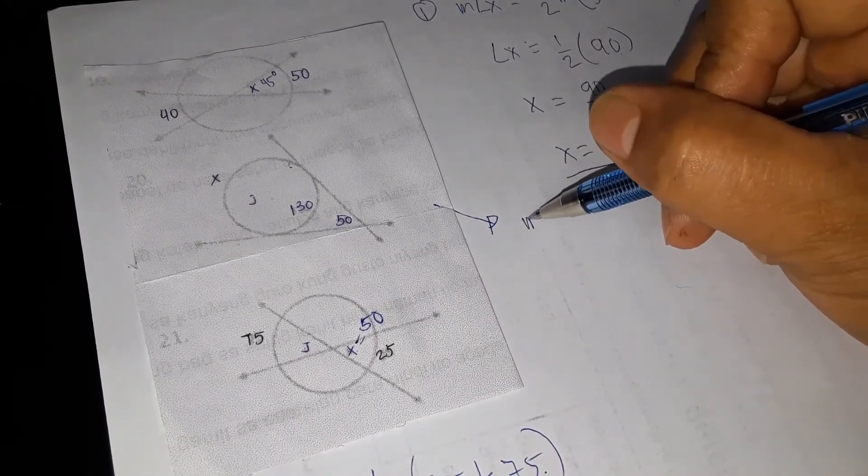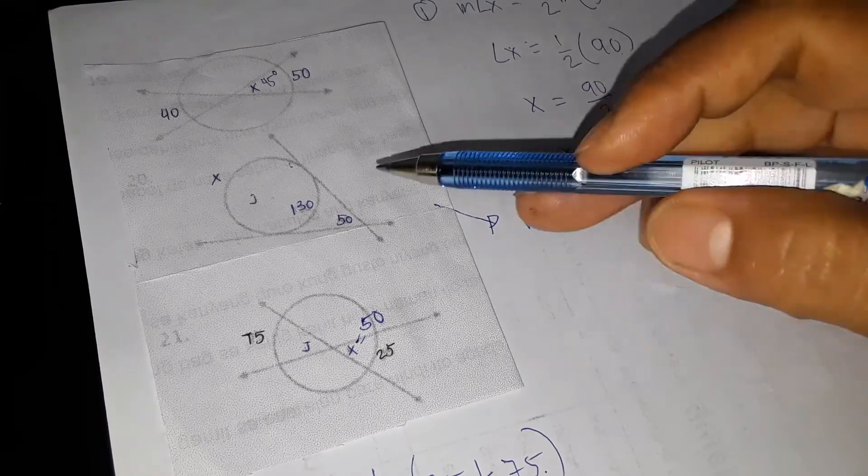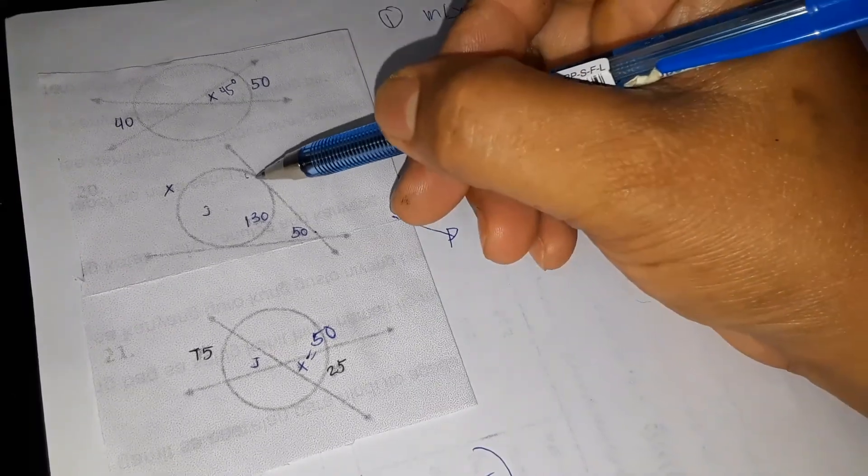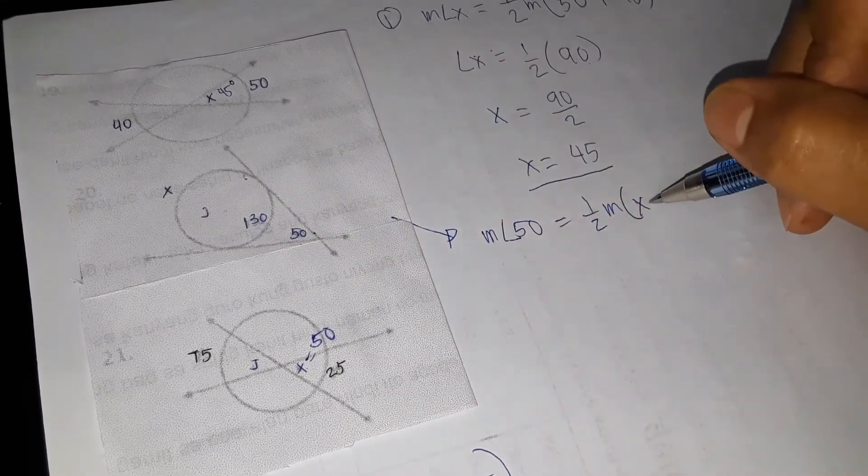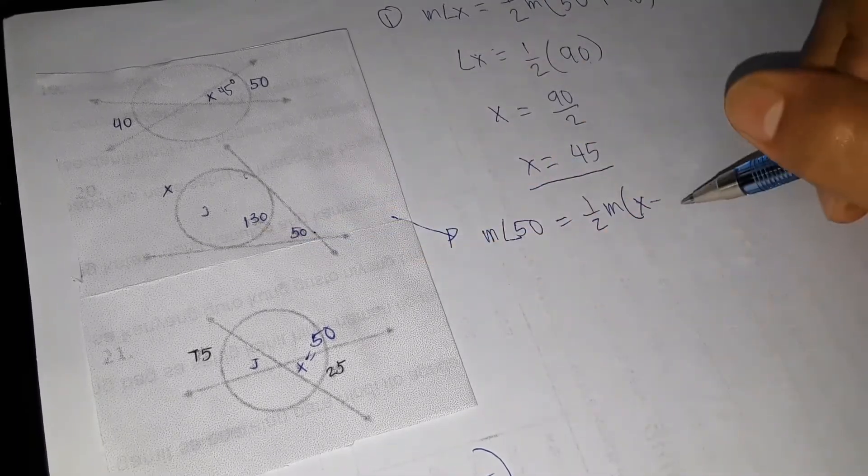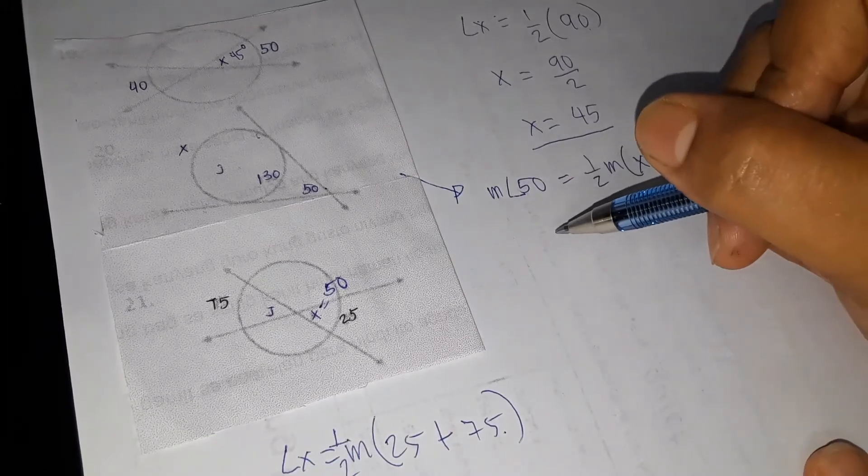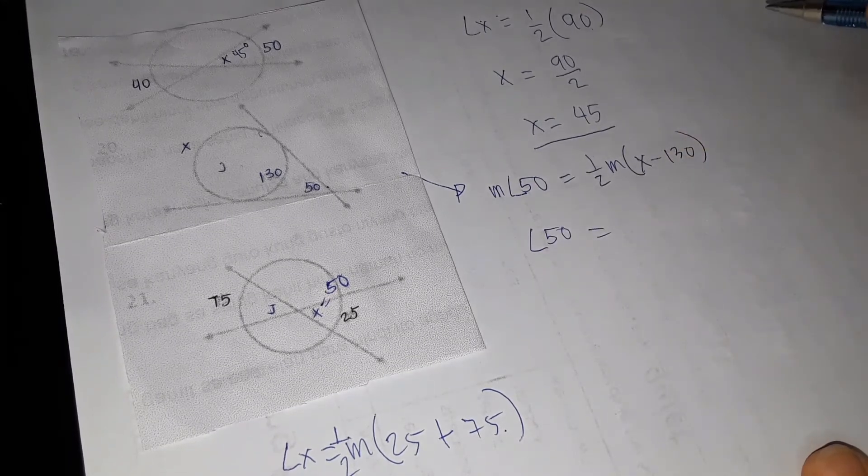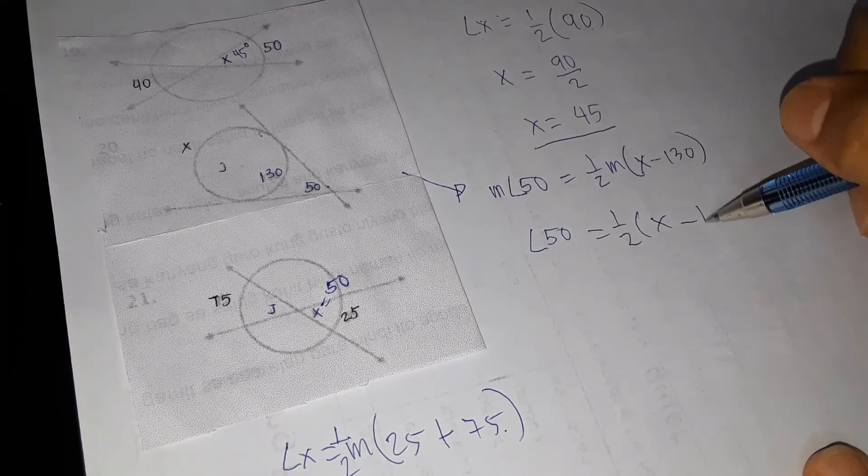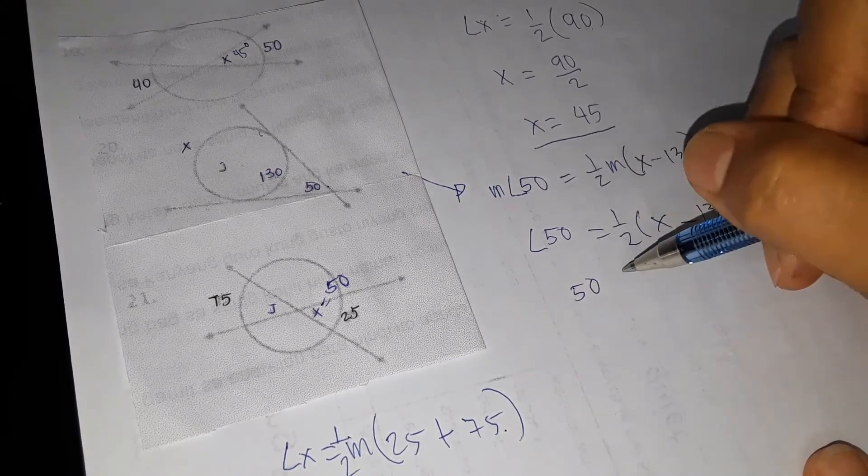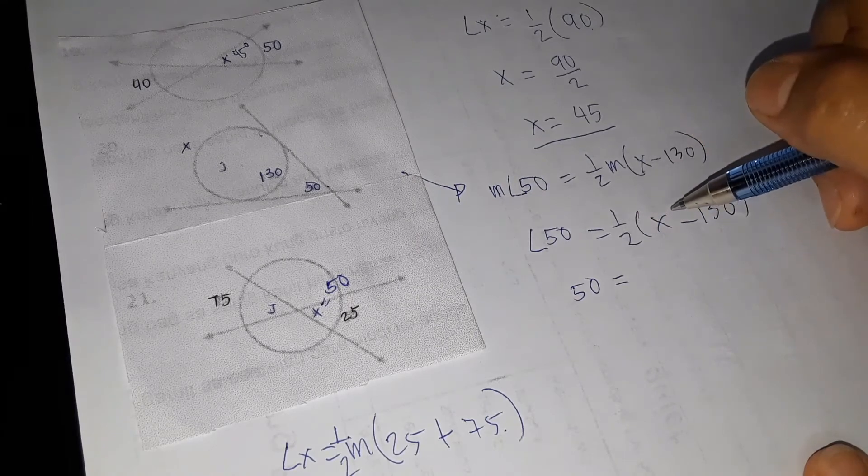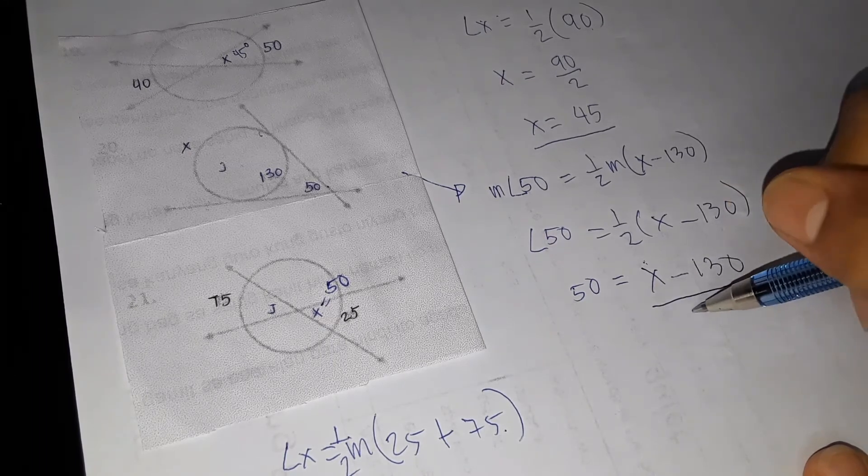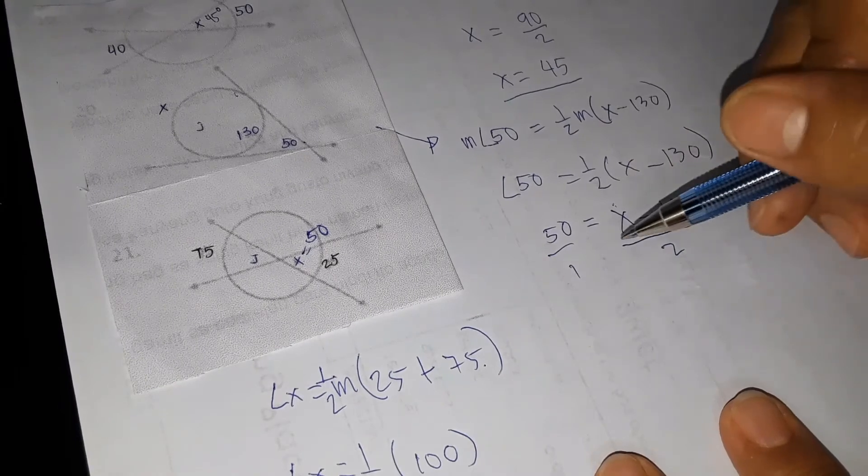So we have measurement of angle 50, this one, is equal to one half the measurement of the difference of arc X minus arc 130. Next, so we have angle 50 is equal to one half X minus 130. So 50 is equal to X minus 130 over 2. So this is over 1, we will do cross multiplication.